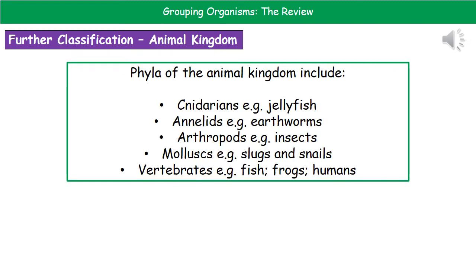Looking in more detail at the animal kingdom, the next step down in classification from kingdom to phylum reveals five different phyla within the animal kingdom. These are the cnidarians, such as jellyfish; the annelids, such as earthworms; the arthropods, such as insects; the mollusks, like slugs and snails; and the vertebrates, which include humans, frogs, fish, and so on.